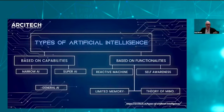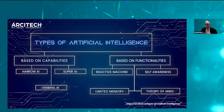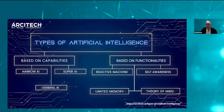AI can also be categorised based on functionality. Currently we are at the stage of limited memory. Reactive machines are the first stage — essentially data in, algorithm, task out. An example is Netflix or Amazon Prime, where an AI platform learns your preferences and gives suggestions on what to watch next. Limited memory goes a step further, where the machine starts to learn about the surrounding environment to help make decisions — an example being a self-driving car, whose task is to drive but also processes and learns from its environment.